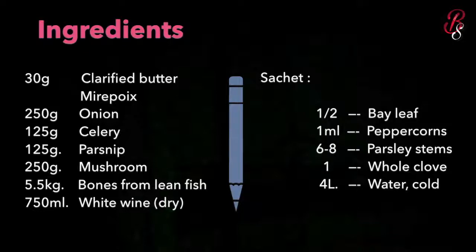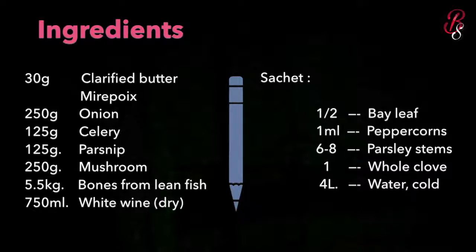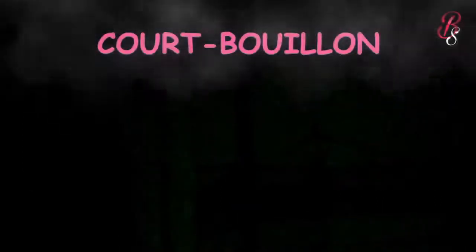The bouquet garni for fish fumé includes bay leaf, peppercorns, parsley stems, and whole cloves, with cold water added. As with all stocks, you must start with cold water — cold to hot — not already simmering water. You can add extra flavoring elements, but this is the standard bouquet garni used in fish fumé.